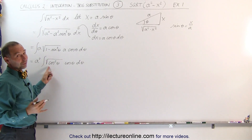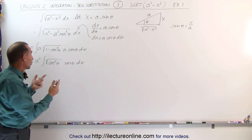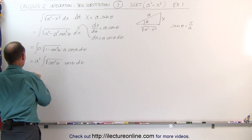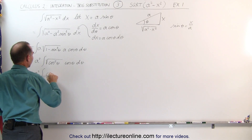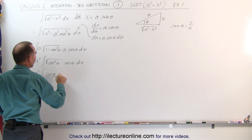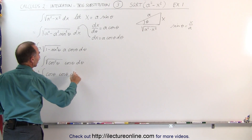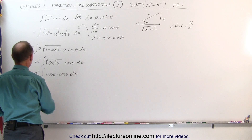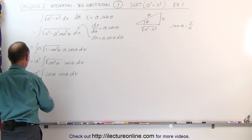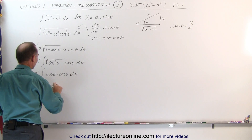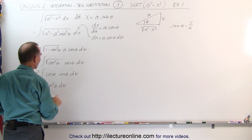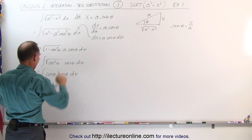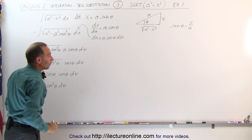The square root of cosine squared theta is simply the cosine of theta, so this equals a squared times the integral of cosine of theta times cosine of theta dθ, which of course can be written as a squared times the integral of cosine squared theta dθ. So we've turned the original integral into this one.